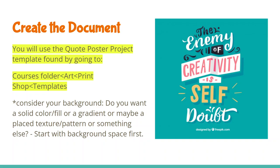Then you're going to start creating your document. You will need to create an image from scratch — you're not going to be opening up a file like you do in the Illustrator documents all the time. There is a template that will be blank. It'll be in the courses folder, under art, print shop, and templates. You're looking for the file that says 'quote poster' because it's set up with the correct dimensions, so when I print it out it'll be a standard size.